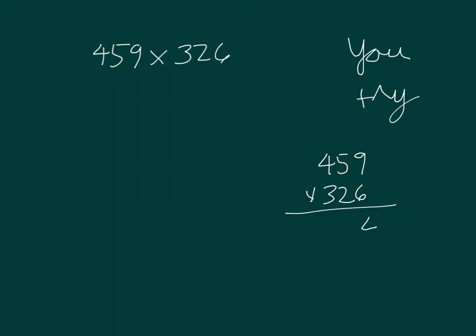6 times 9 is 54, 4 regroup of 5. 6 times 5 is 30 plus 5 is 35, 5 regroup of 3. 6 times 4 is 24 plus 3 is 27.